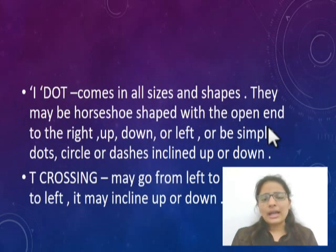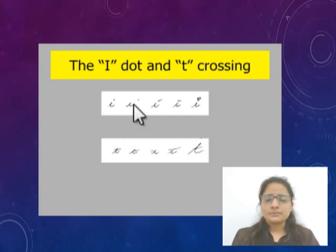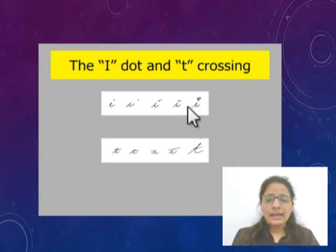Next is the i-dot. The i-dot comes in all sizes and shapes. Here is an example: in the first one, the i-dot is placed slightly to the right; in another, the dot is placed with much space above the letter; in another, the dot is placed just slightly away from the 'i'; and in another, a circular i-dot is used.